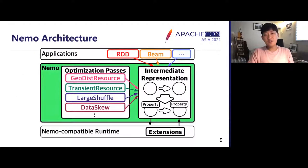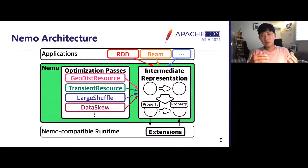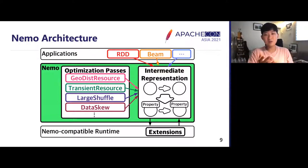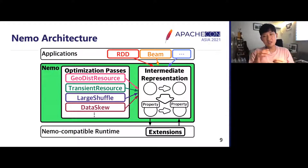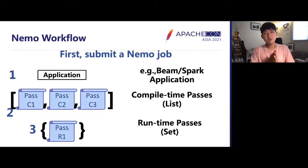Here's a brief overview of the Nemo architecture. First, Nemo takes data processing applications — primarily Apache Beam applications as well as Spark RDD programs — and turns them into our intermediate representation, which I'll refer to as an IR from now on. On the IR, it applies a specific set of hand-tuned optimization passes designed for each of the different use cases, to tag each IR vertex and edge with specific properties that run efficiently in the specific use case, which can be understood and executed by the Nemo-compatible runtime.